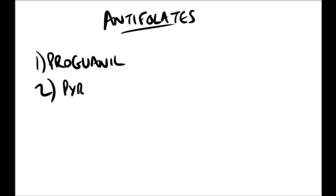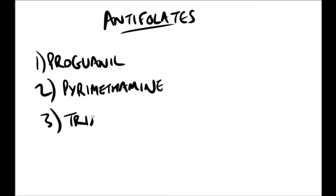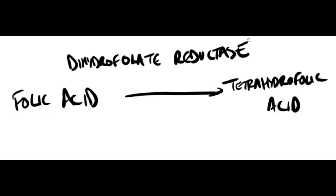Some anti-folates, such as proguanil, pyrimethamine, and trimethoprim, selectively inhibit folate actions in microbial organisms. Trimethoprim is used as an antibiotic. The majority of anti-folates work by inhibiting dihydrofolate reductase, which is the enzyme responsible for converting folic acid to its active form, tetrahydrofolic acid.